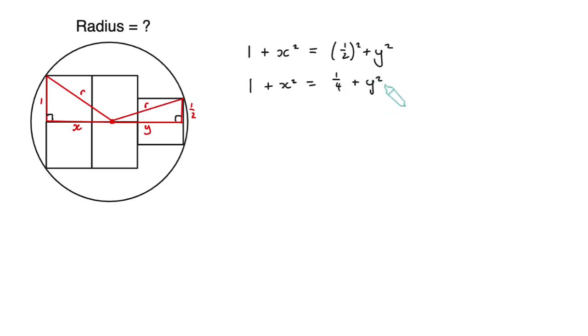One half squared is one quarter, so doing a little bit of rearrangement we get three quarters equals y squared minus x squared. We also know that x and y together are just as long as three unit squares, so we have another equation linking x and y which is just x plus y equals 3.